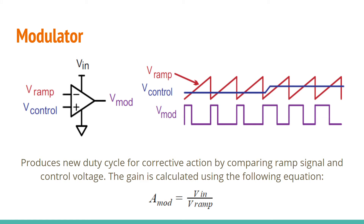The modulator is the only block in the system that does not depend on the frequency. It takes in the control voltage from the compensator and compares it to the ramp signal. It then produces a new duty cycle in the form of a square wave with the limits of 0 volts and VIN. As the voltage control increases, the modulator output increases. And when the control voltage is greater or equal to the peak of the ramp, the duty cycle is at 100%.